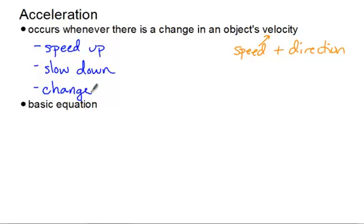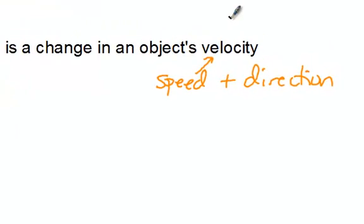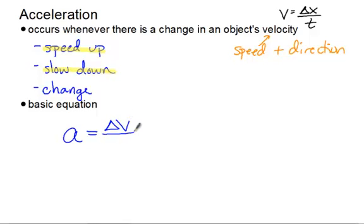When we talk about calculating acceleration, we're going to look at an object speeding up and slowing down. Acceleration is the rate of change of velocity, much like velocity was the rate of change of position. Our velocity equation was V = ΔX/T, so our general form for acceleration is A = ΔV/T — the change in velocity over the time it takes for that velocity to change. Since delta means final minus initial, we get A = (VF − V₀) / T.